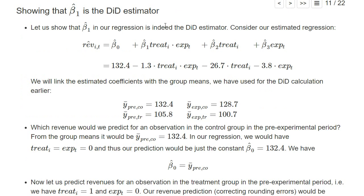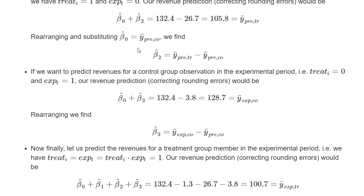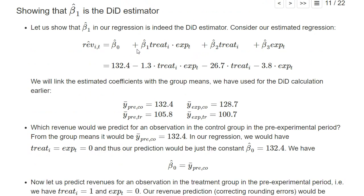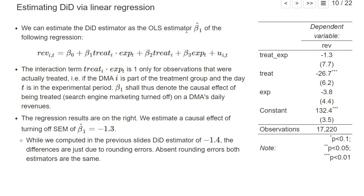In the next slides I show why that is the case. You can go through this yourself — I will skip it in the video. You can also just accept the result, but it's nice to go through this derivation carefully to better understand why beta-one-hat in this regression is actually the difference-in-differences estimator.